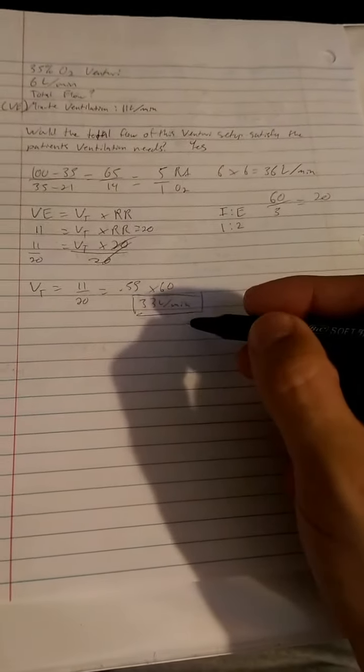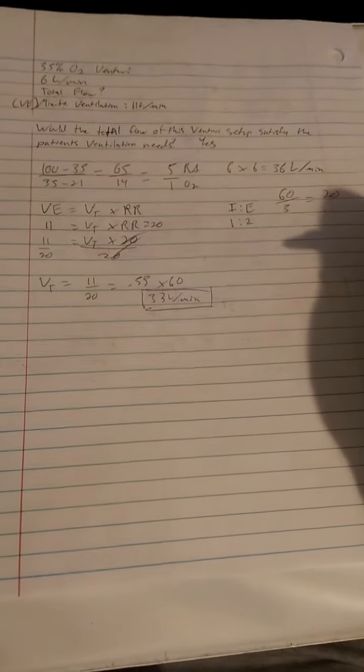Now, if something were to happen, it may very quickly not. That's not a whole lot of buffer, right? 33 or 36, that's not a whole lot. Something could happen very quickly and he may need more. But in the event of this question, the answer is yes. Now, just to elaborate more on this inspiratory-expiratory ratio here.